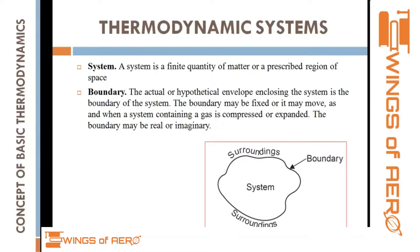Here is a simple example. Imagine your house — your house is the system. The compound wall around your house is the boundary. Everything outside that boundary wall, such as a neighbor's house or a field, is considered the surrounding. The same concept applies in thermodynamics.